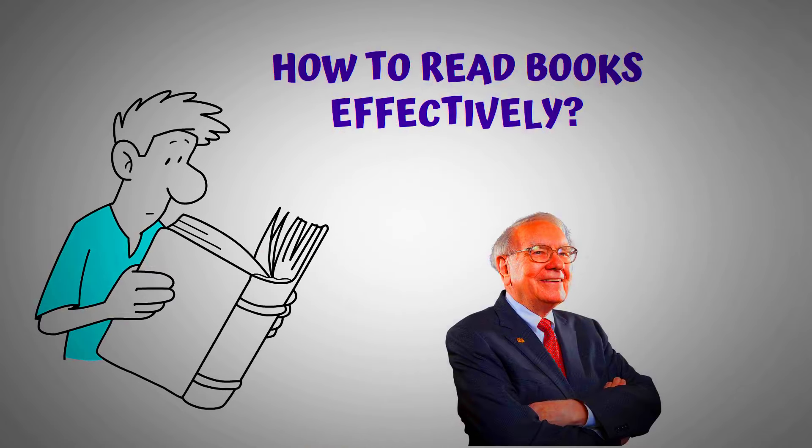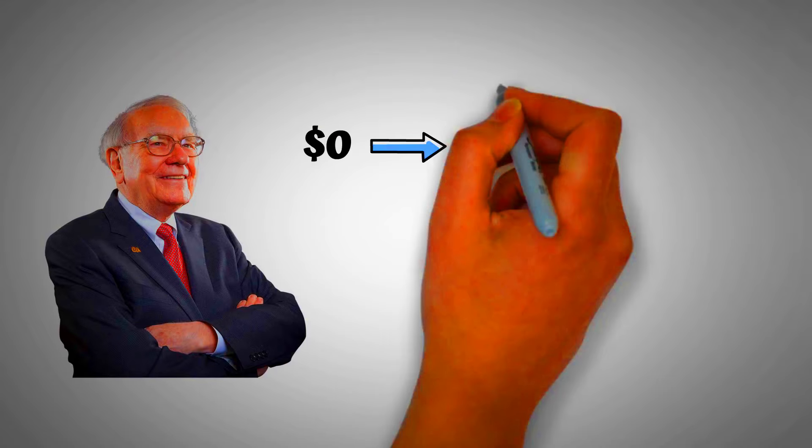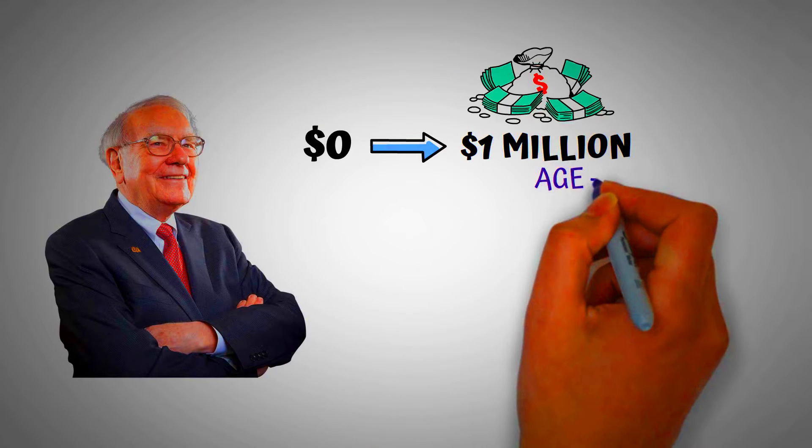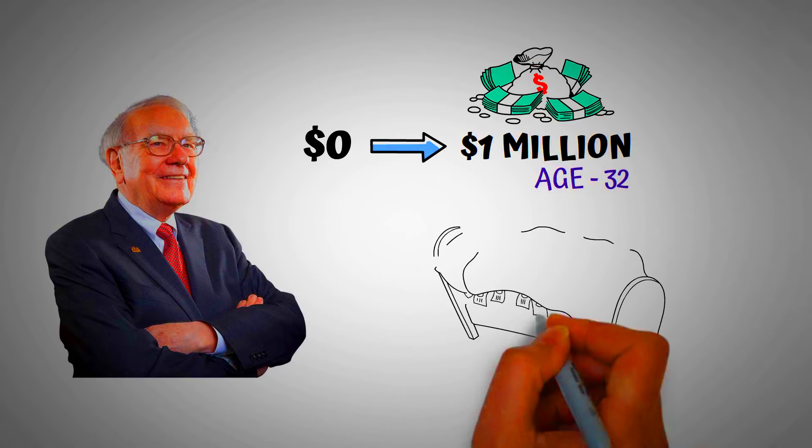Because of this habit, Warren Buffett turned $0 into $1 million at the age of 32, and turned $1 million into $85 billion.